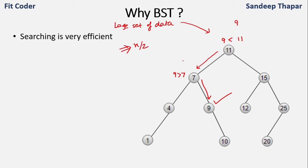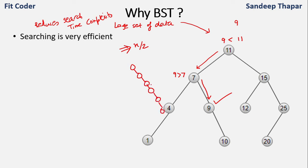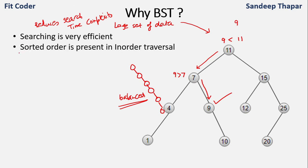One problem can arise if the tree is not balanced. If the tree is skewed, the search operation is not efficient because all nodes are in a single line. We need to make sure the tree is height-balanced. If the tree is balanced, the searching operation will be very efficient. We'll see in subsequent videos how to create a balanced binary tree.